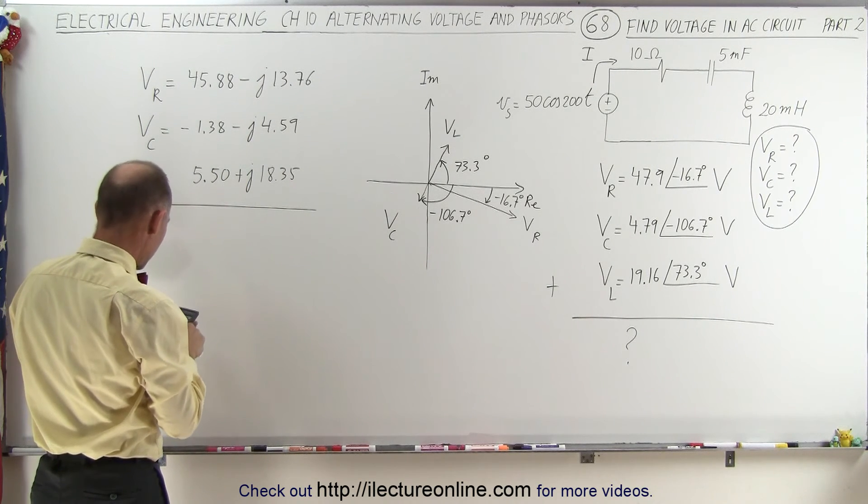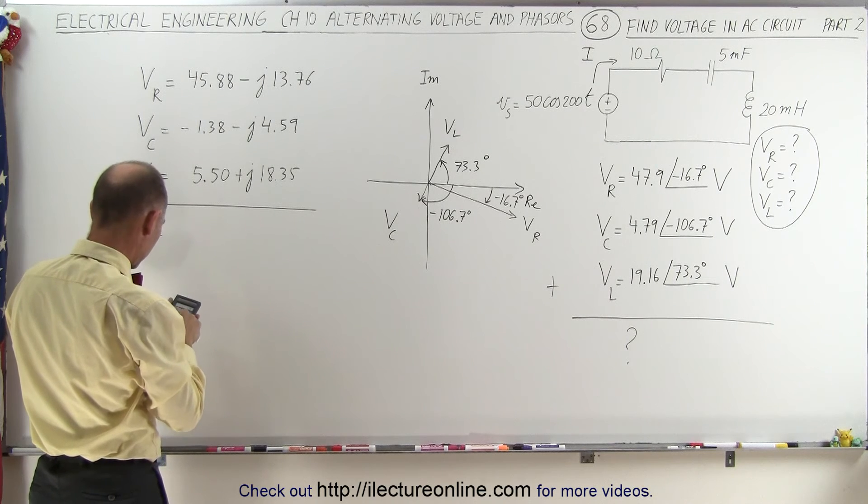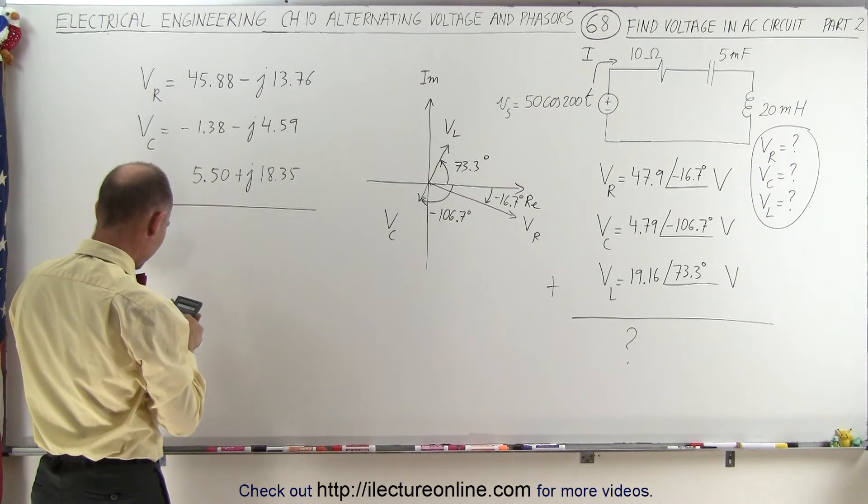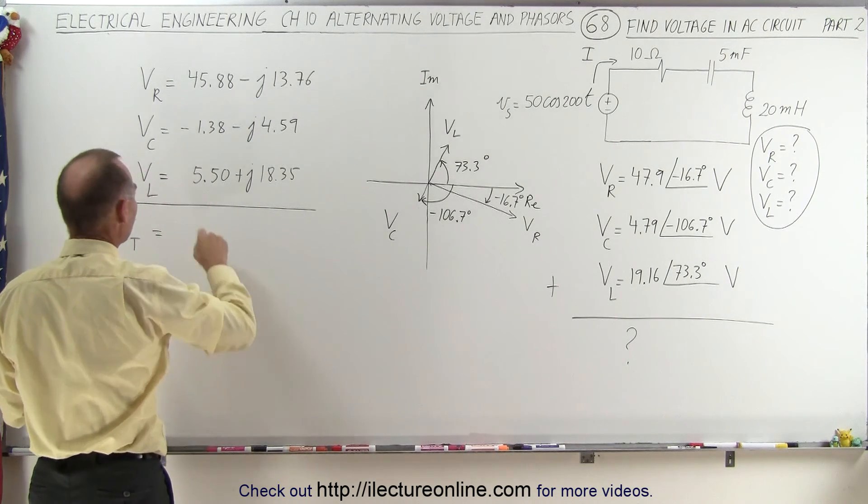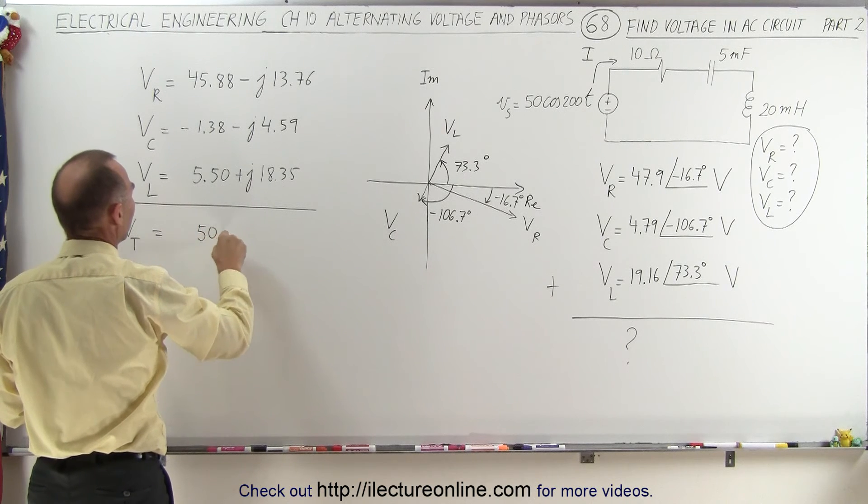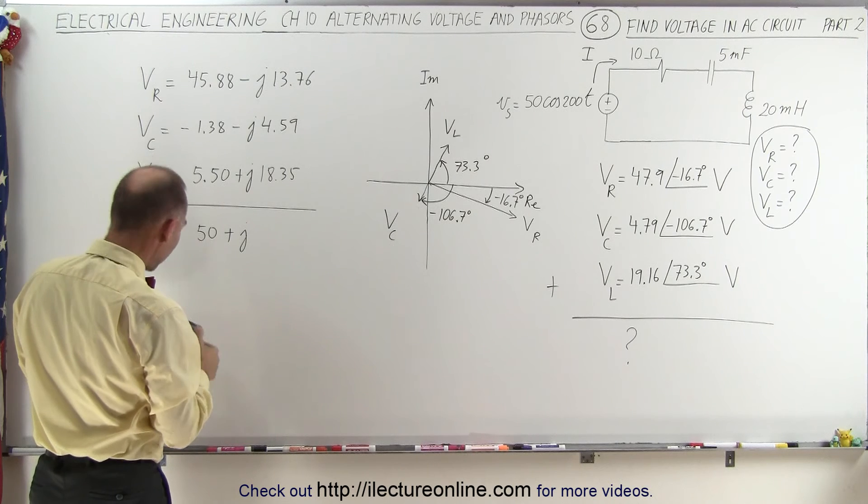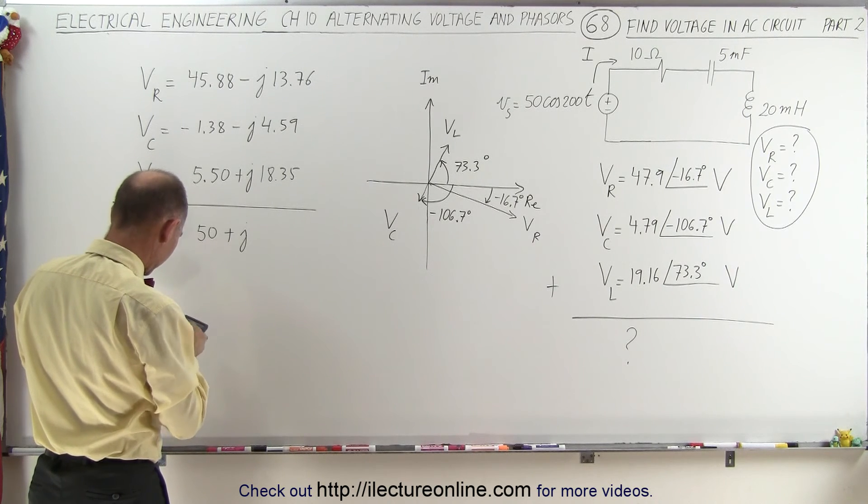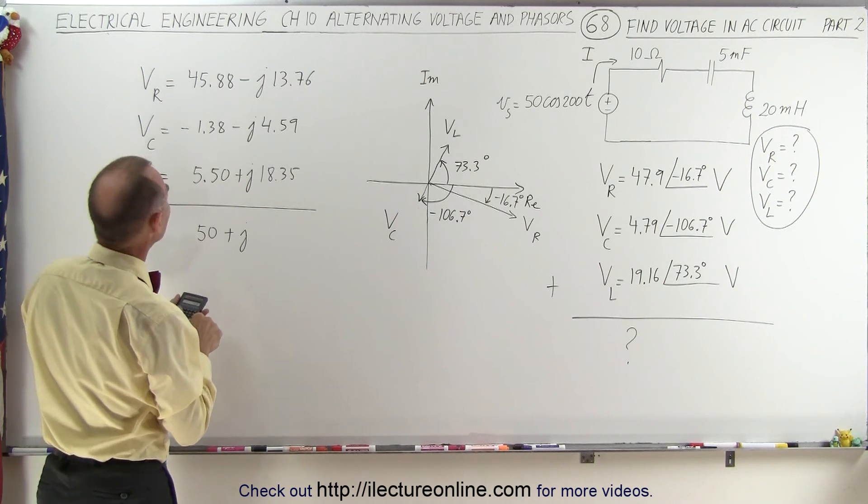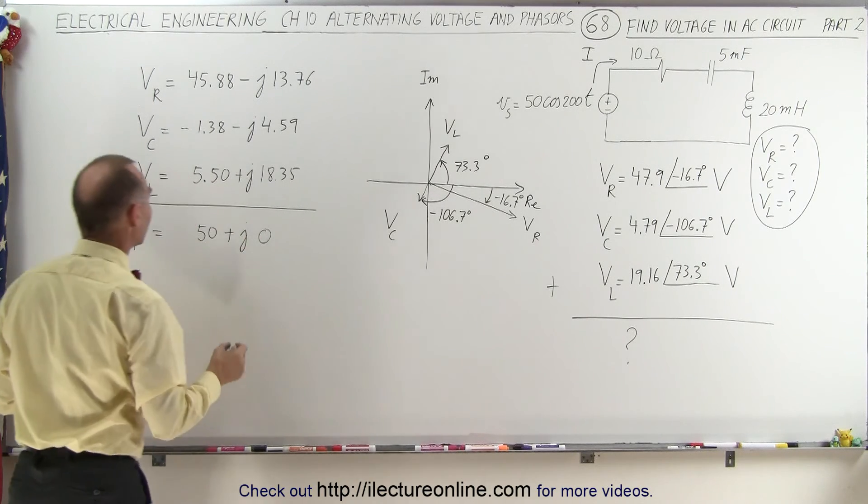45.88 minus 1.38 plus 5.5, we get 50 volts in the real part. And plus j, when we add that together, we get minus 13.76 and zero in the imaginary part.